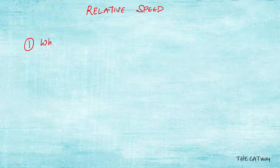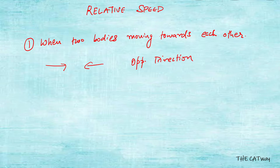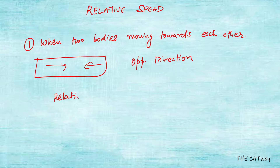There are two cases where we use relative speed. The first case is when two bodies are moving towards each other — that means they are moving in opposite directions. In this case, the formula for relative speed is the sum of the speeds of both bodies.